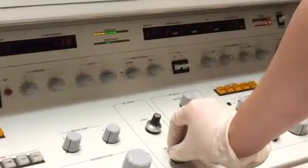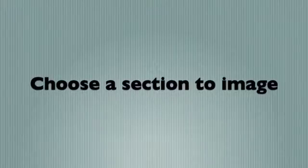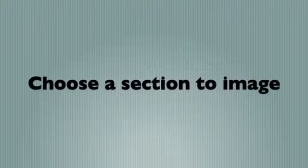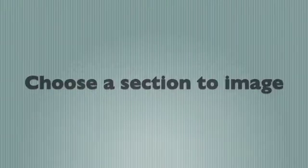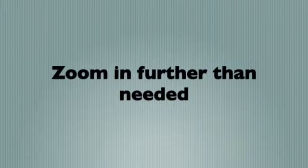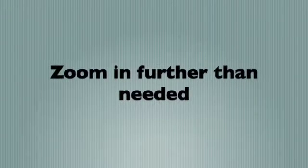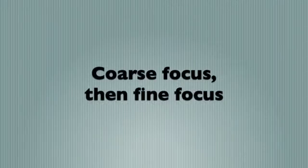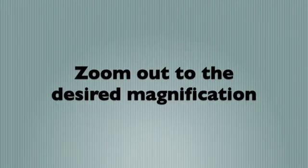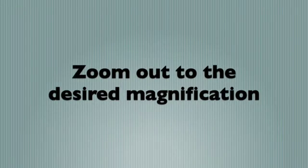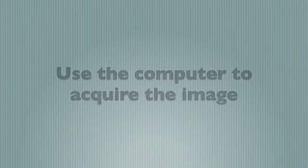This will ensure clear images. Adjust the stigmator in the X and Y direction to get the area of interest. Zoom in further than necessary and then focus your image using both coarse and fine focus. After the image is focused, zoom out and your image will be much clearer. Finally, capture the desired area by pressing the Acquire button on the screen.